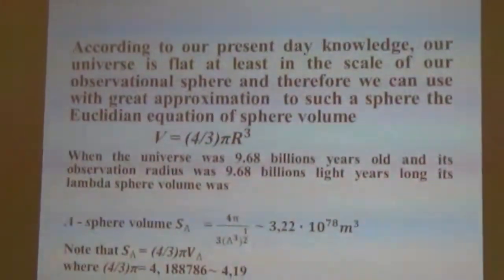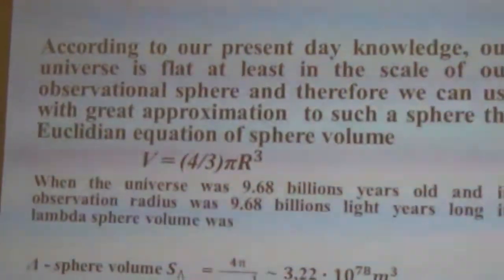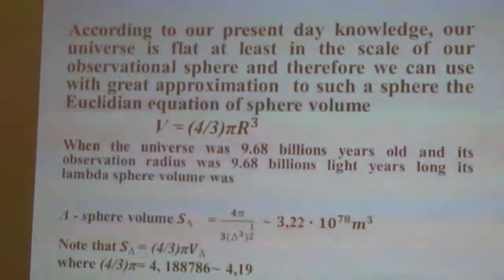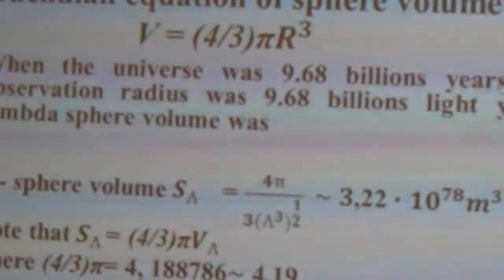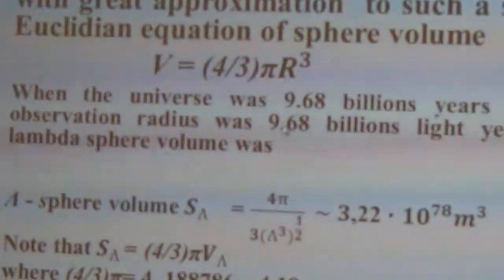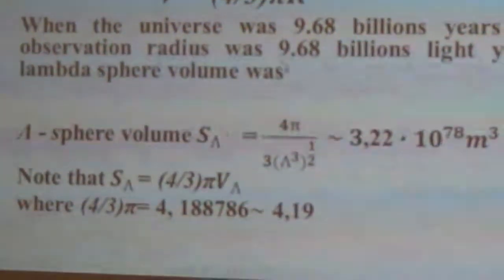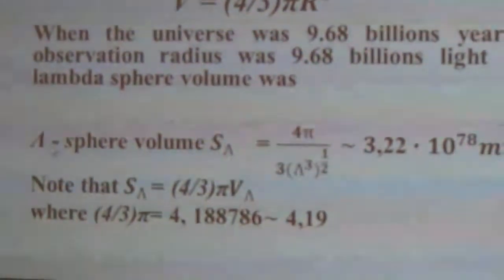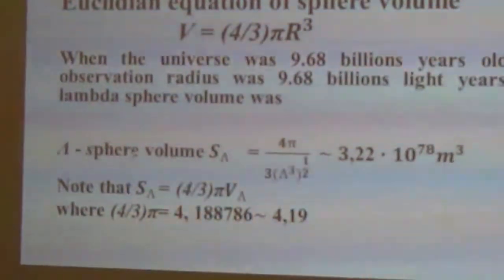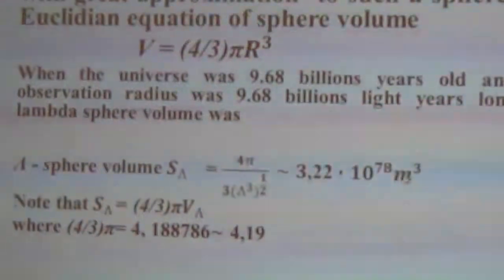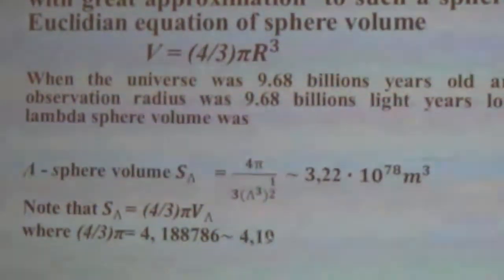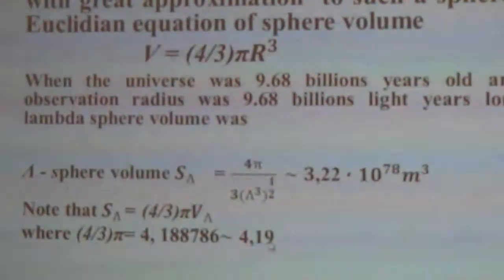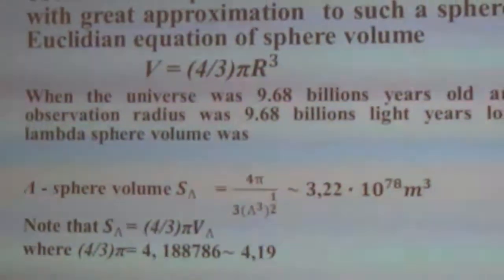Using the Euclidean equation, when the universe was 9.68 billion years old and the observation radius was 9.68 billion light years long, the lambda sphere volume was given by the lambda sphere volume equation. Note that this lambda sphere is 4.19 times greater than the lambda volume.